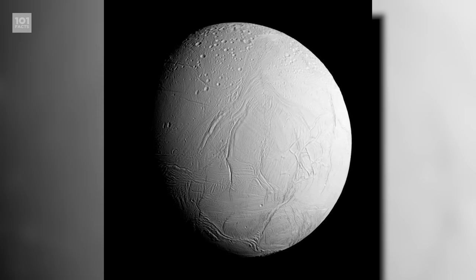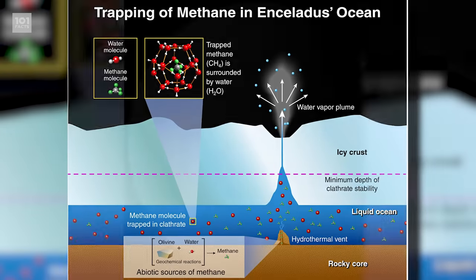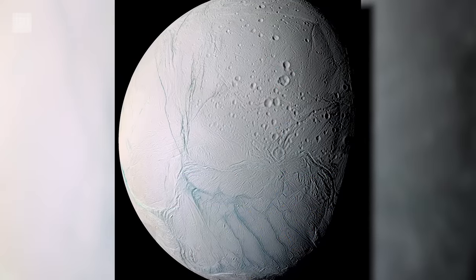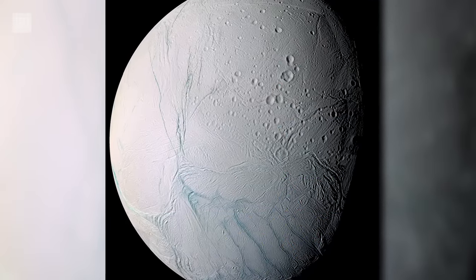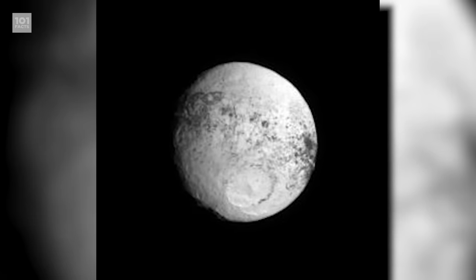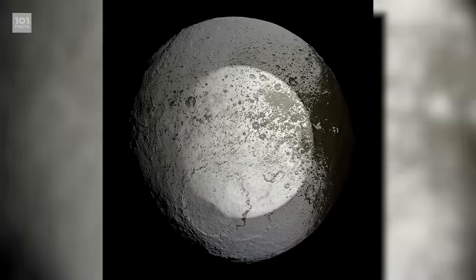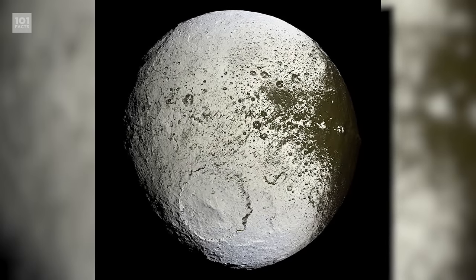The moon Enceladus apparently shows evidence of ice volcanoes, which is already badass, but it also has 101 geysers on its southern pole. There's also a moon called Iapetus, which has one side that's bright white, and the other is black as coal, and no one really knows why.